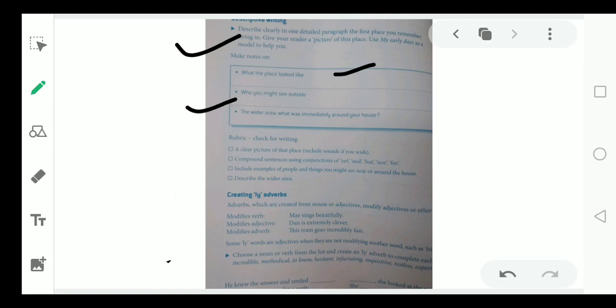Who you might see outside. Means, here you can write about your neighbors or about the things you observe around your house. The wider area means what was immediately around your house. Means, it can be a park. It can be your school. It can be a playland, etc. This is how you are going to give a proper description to your paragraph.